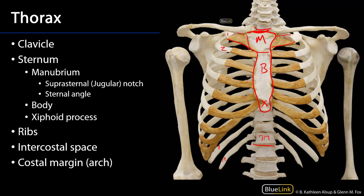There's also the sternal angle — the bony angle between the manubrium, which is canted posteriorly, and the body. That's a very useful landmark for establishing the thoracic plane. The thoracic plane runs between that sternal angle and the intervertebral disc between T4 and T5. The portion of the mediastinum superior to the thoracic plane is the superior mediastinum. The remainder — the anterior, the middle, and the posterior — are all inferior to the thoracic plane.